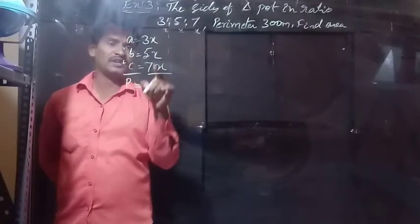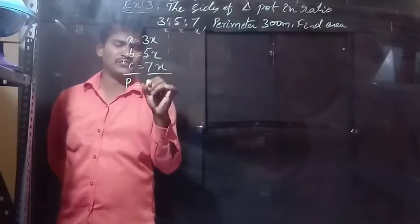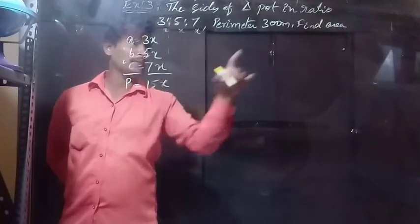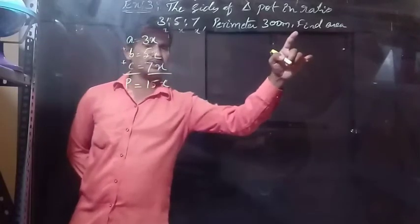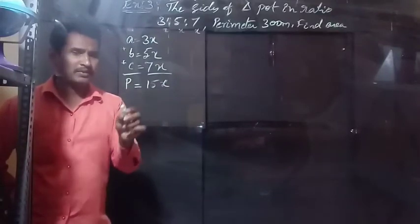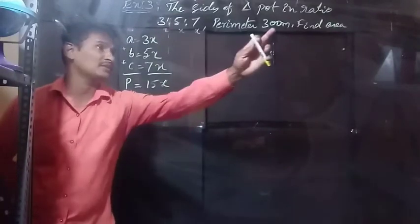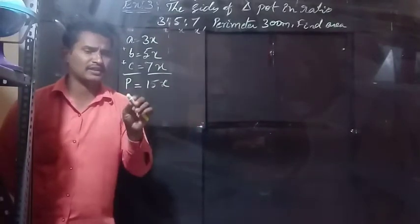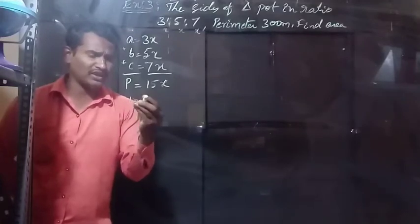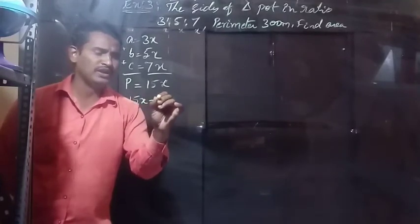The sum of all sides equals the perimeter: 3x + 5x + 7x = 15x = 300.